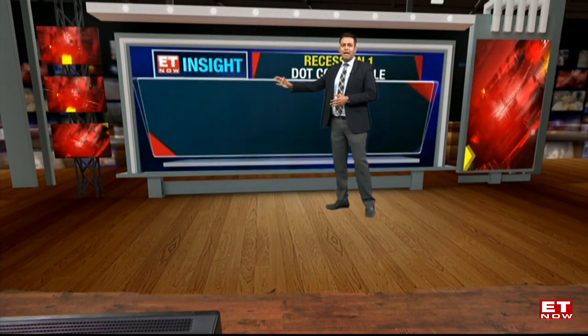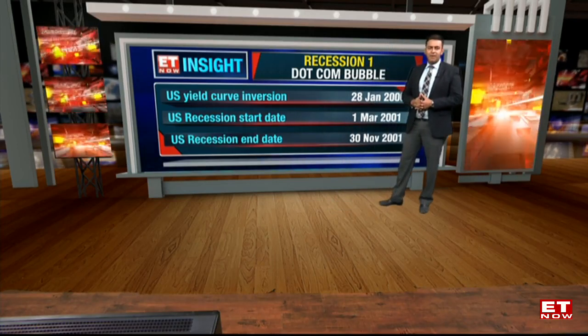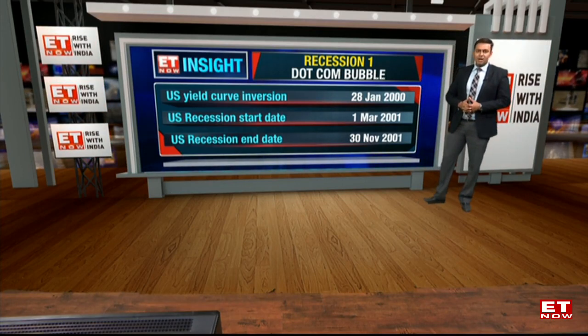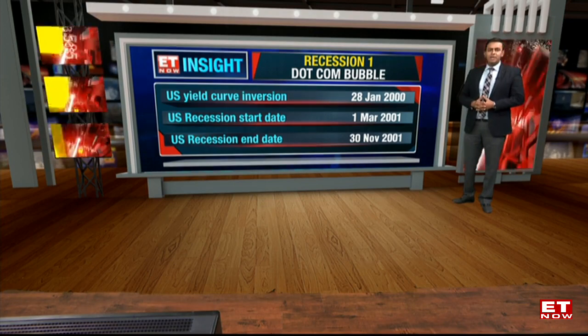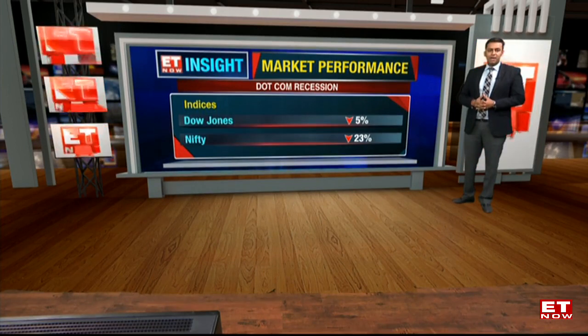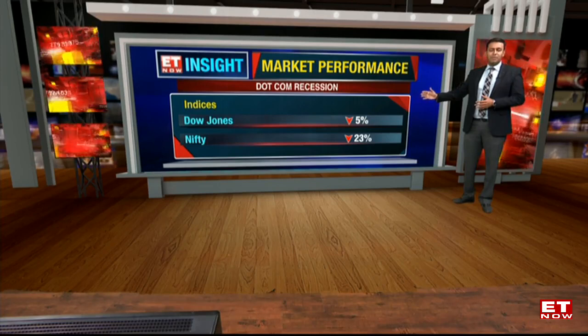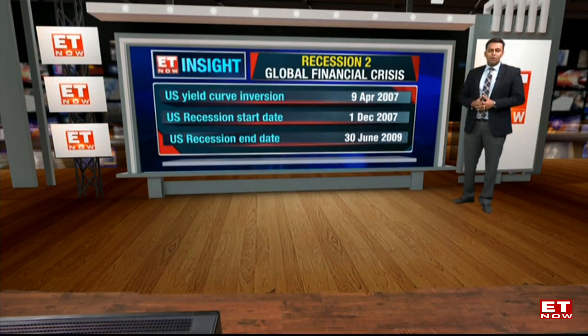The first one we have is the dot-com bubble, and you can see that it has inverted before as well. The dot-com bubble happened in 2000 and 2001. How the markets reacted was that the Dow Jones slipped about 5% during the recession period, and the Nifty was once again the worst performing index, which was down about 23% odd.